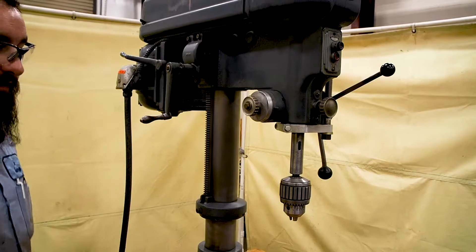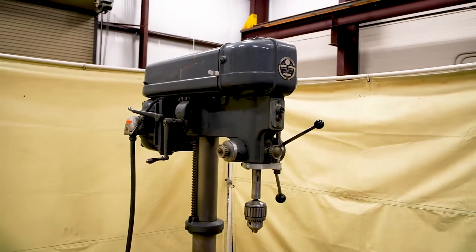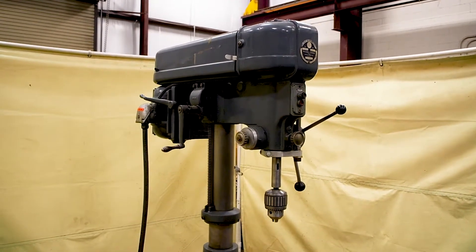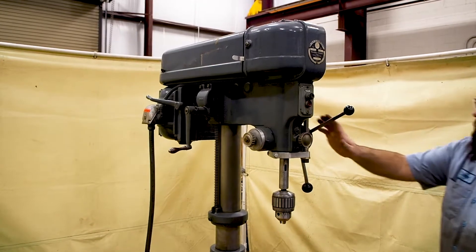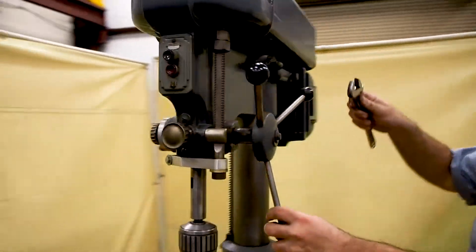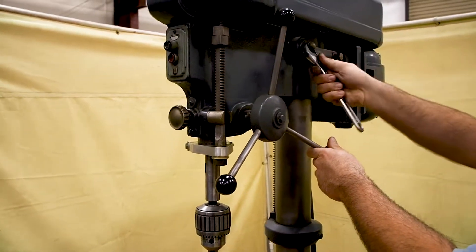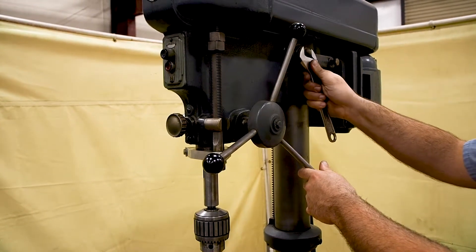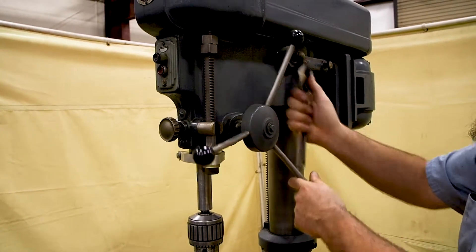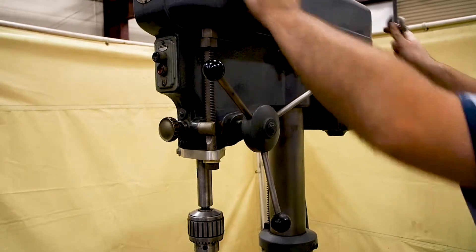And this also disengages the handle. Over here on this side is the binder. So if you get it where you want it, snug it down. Now it doesn't move.